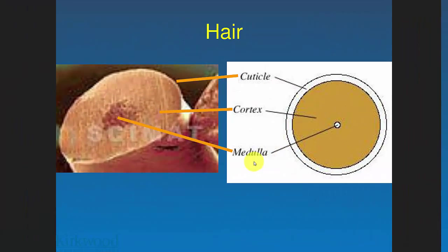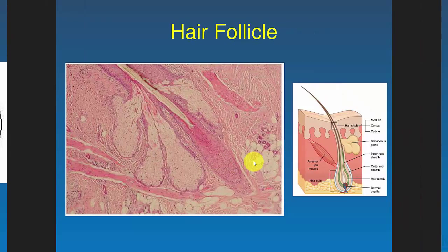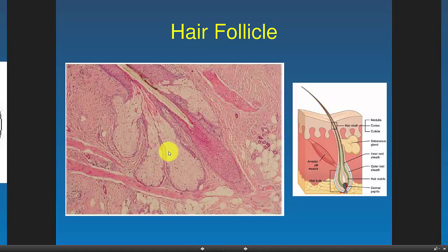Hair is divided into three main regions: the cuticle, which is the outer covering; the medulla, which is the very middle; and the cortex, which is in between. In a hair follicle view, you can also see the sebaceous glands. Erector pili muscles will give you goosebumps or make your hair stand up.